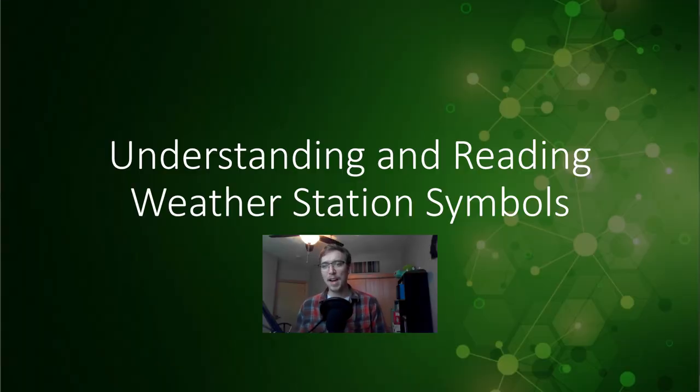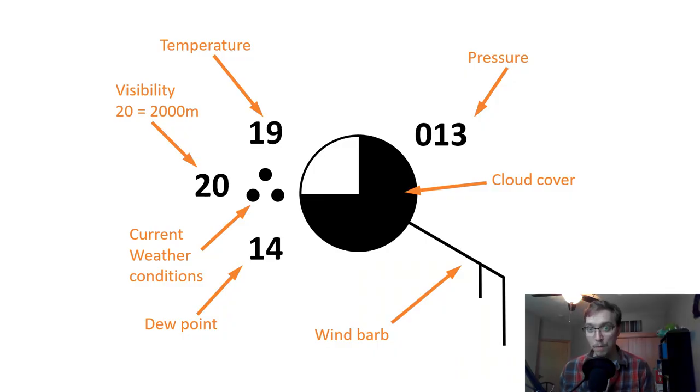So let's dive in on understanding and reading weather station symbols. You may see a map and you might see a bunch of symbols that look something like this. So what do we got here? We've got this big circle in the center, the weird flag barb coming off of it, a whole slew of numbers, some dots. What is actually going on here? Well this is a quick way to show around any given station a whole slew of information. So you would see pressure in the top right here.